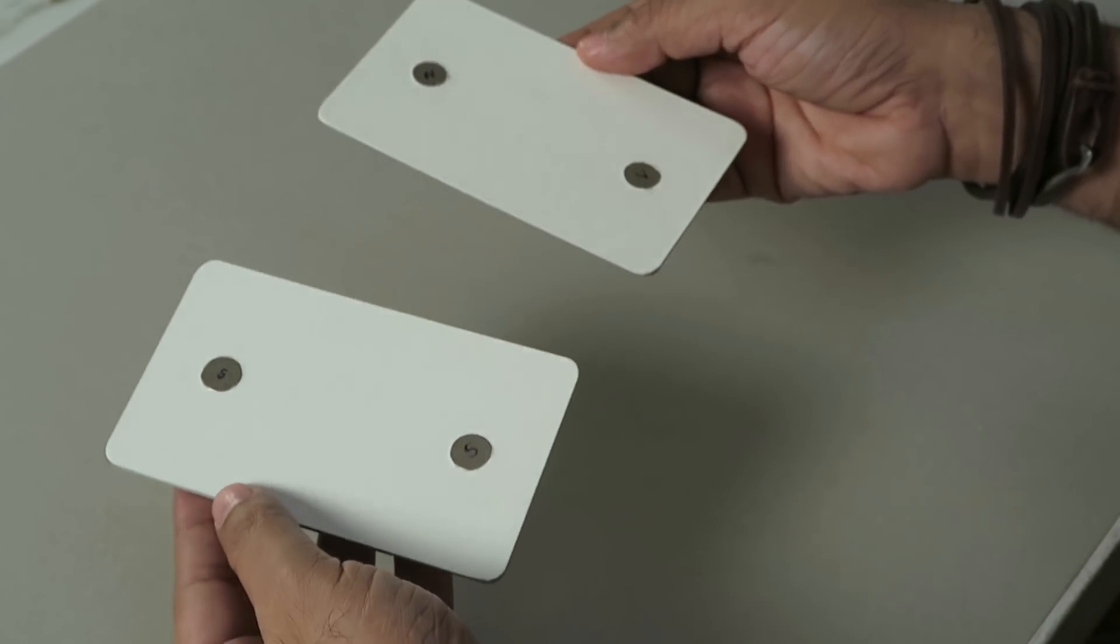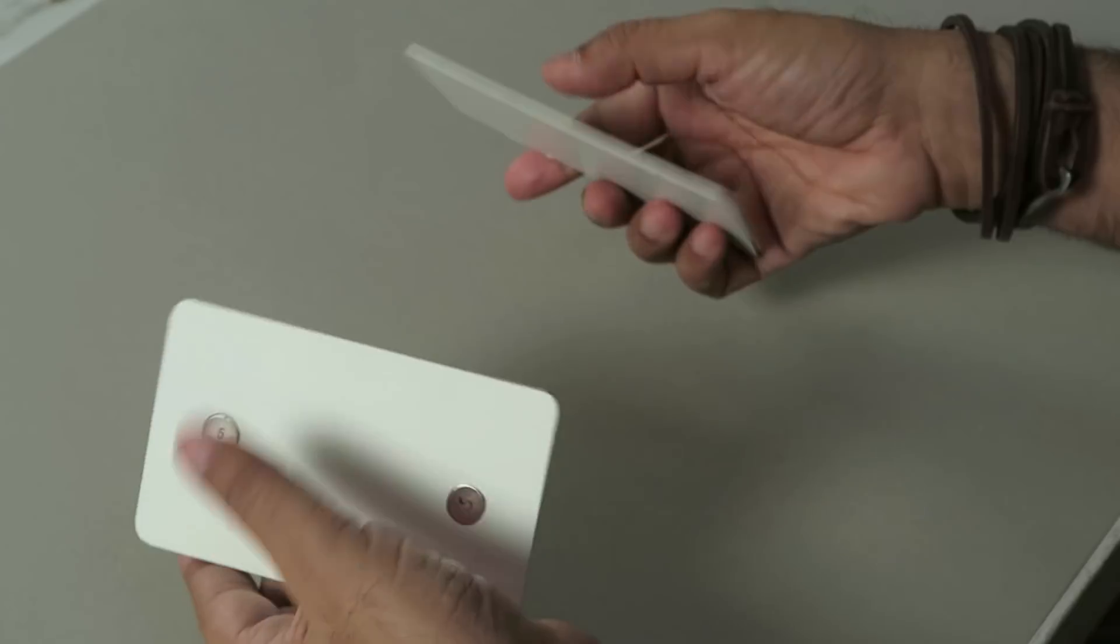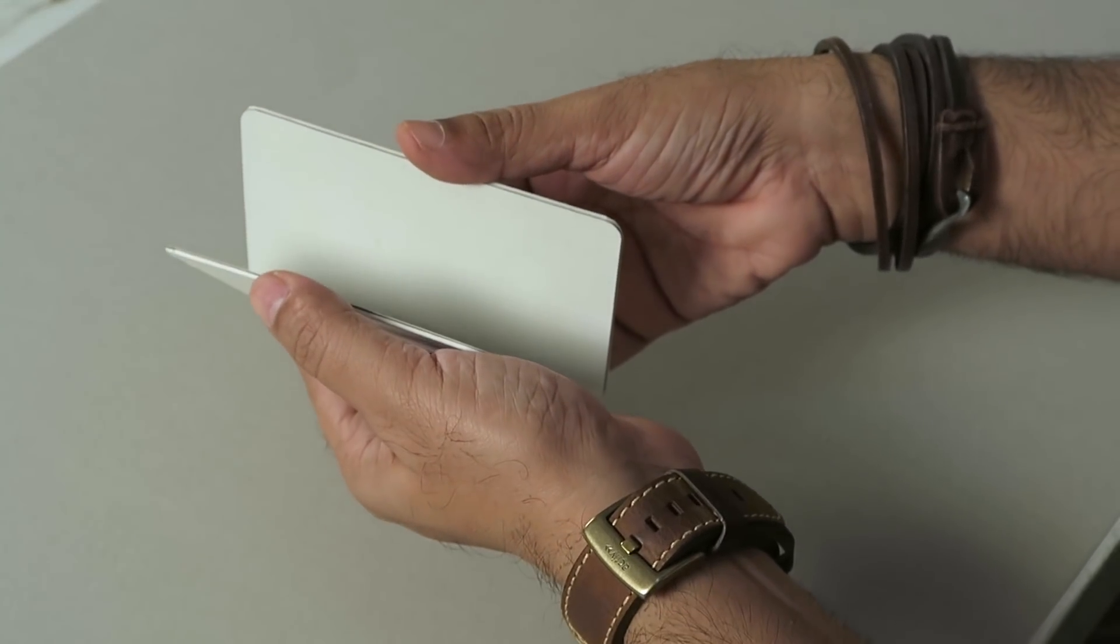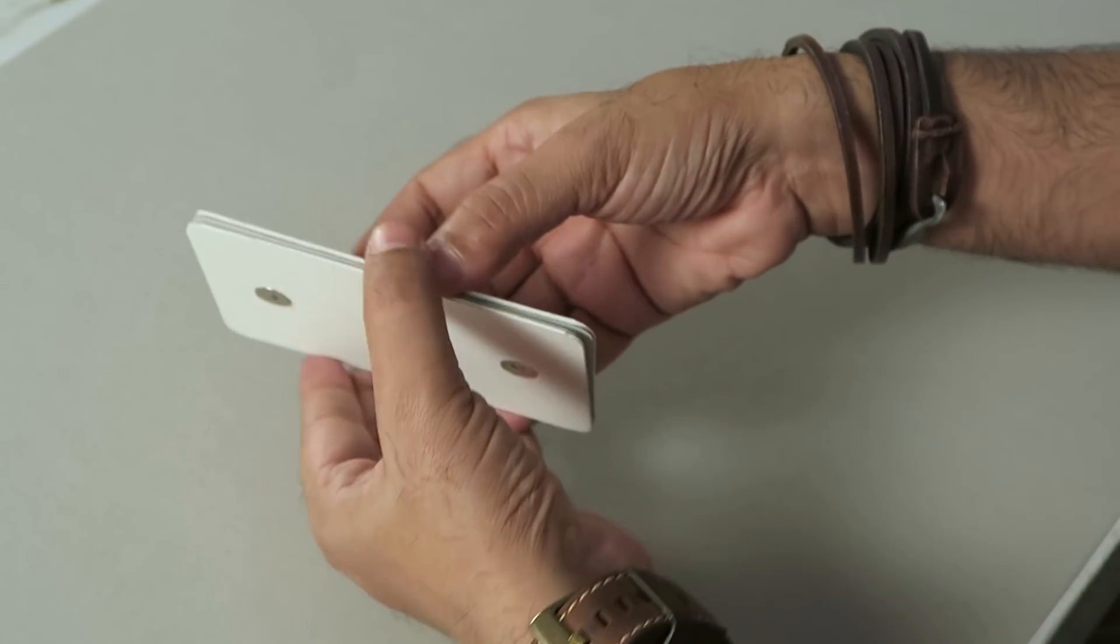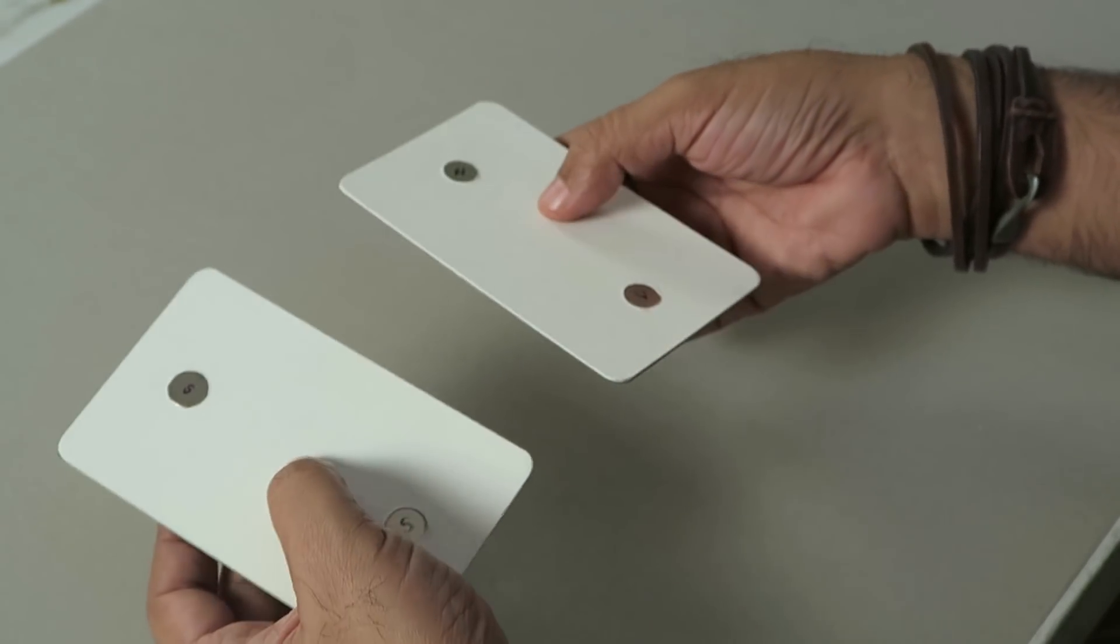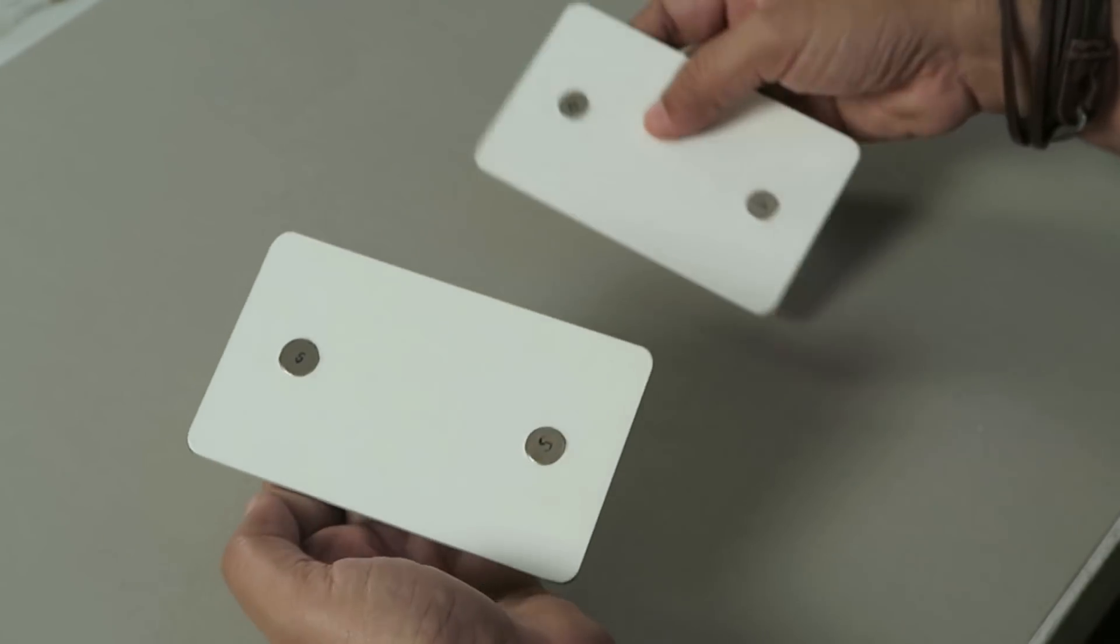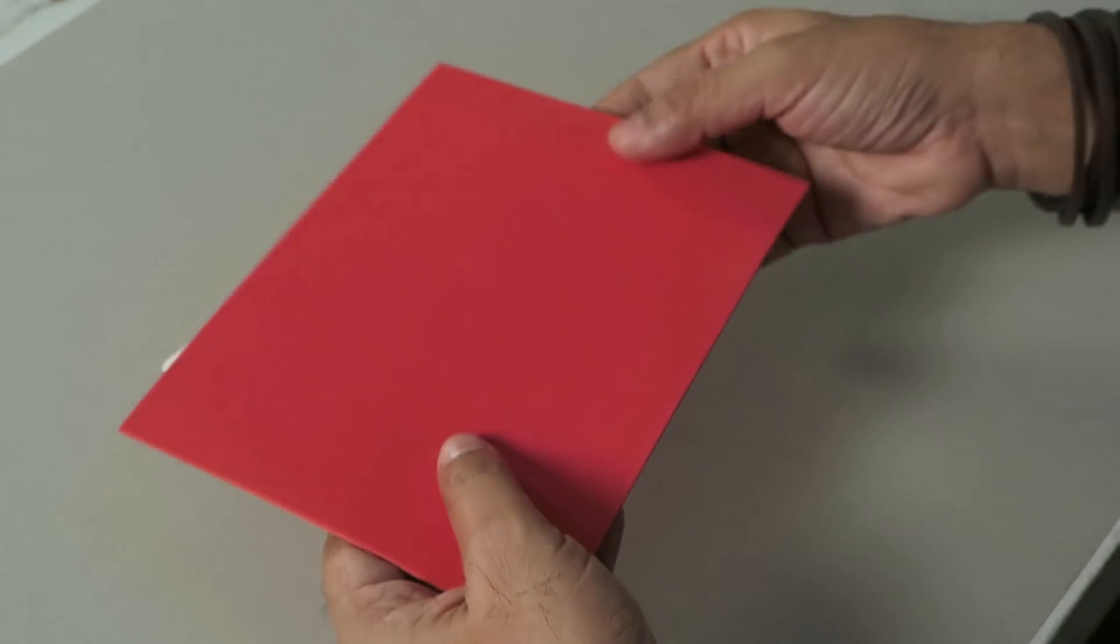So you can see the covers are ready, the front and the back, and if I just bring them closer, watch this, it sticks, so it works really well. But now the magnets are visible, so what you can do is you can add a layer of foam sheet. So let's get the foam sheet in.